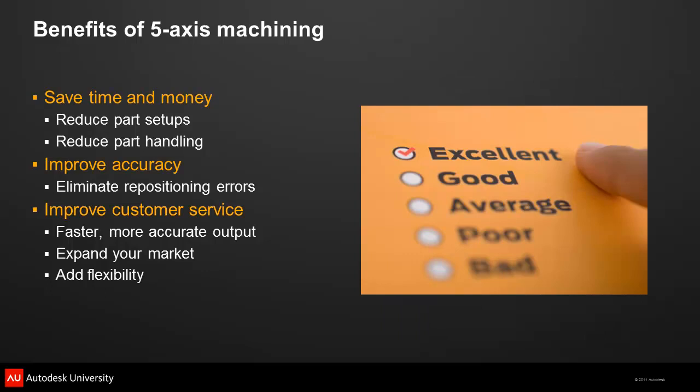And let's not forget the most important people — your customers. You can deliver orders faster and with better quality. You can also reach more markets by expanding the range of part geometries you can cut. A 5-axis machine can also help you streamline your machining processes by combining them on one machine.